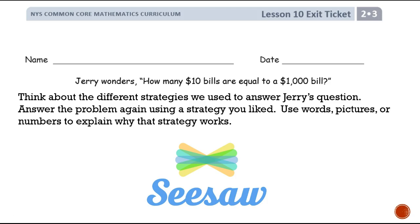Now it's your turn. For your exit ticket: Jerry wonders how many $10 bills are equal to a $1,000 bill. Think about the different strategies we used to answer Jerry's question, then answer the problem again using a strategy you like. Use words, pictures, or numbers to explain why that strategy works. If you can think of a different strategy than what we used, use that one. When you're done, take a picture and Seesaw it to your teacher. Good luck!